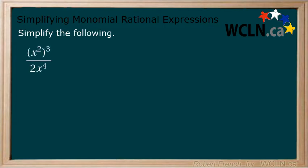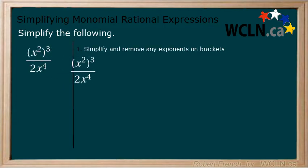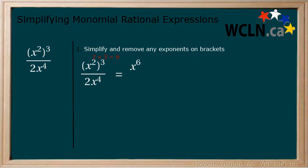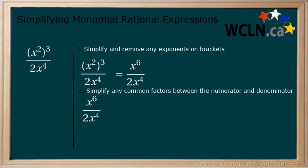Simplify the following monomial rational expression. Step 1: Simplify and remove any exponents on brackets. We can see this step applies to our numerator. x squared raised to the power of 3 equals x to the power of 6, using the exponent law for powers. Now we have x to the power of 6 over 2x to the power of 4. Step 2: Simplify any common factors between the numerator and the denominator. We have x in both the numerator and denominator, and can simplify by using the exponent law for the division of powers with the same base. 6 minus 4 equals 2, so we have x squared over 2.